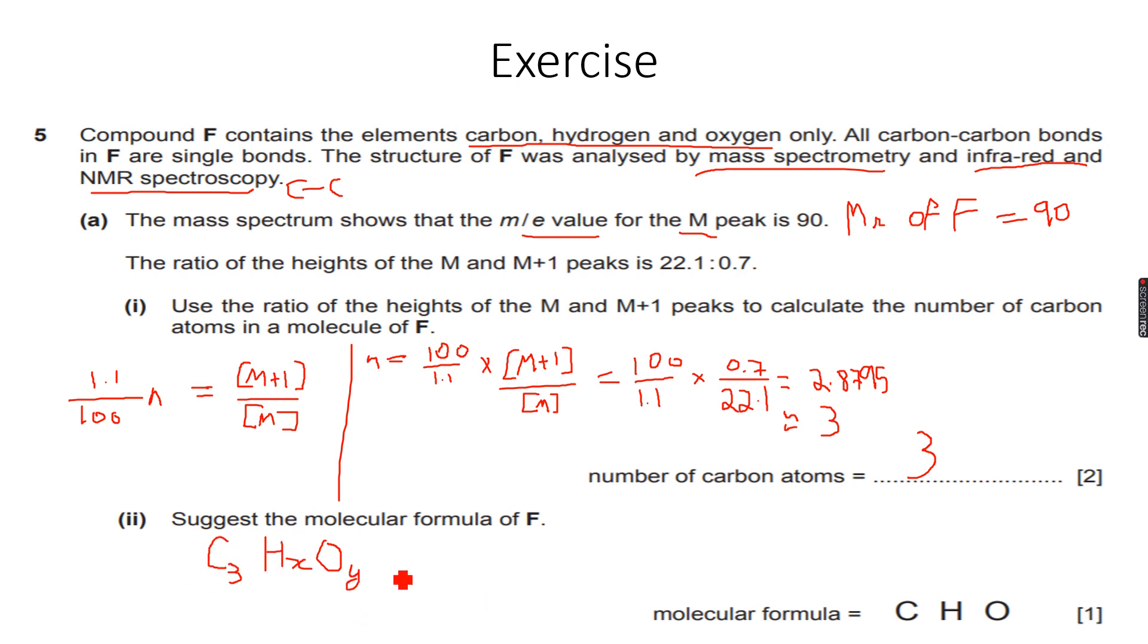I know there are three carbon atoms, so the total mass just from the carbon atoms will be 12 times 3, which is 36. So I have 36 atomic mass units just from the carbon atoms.